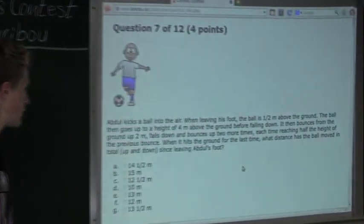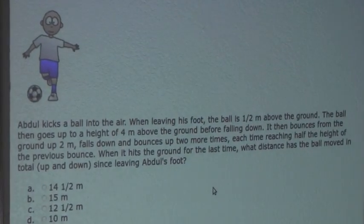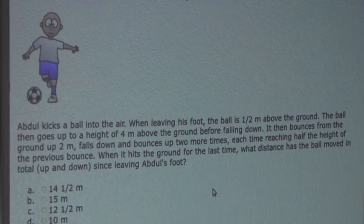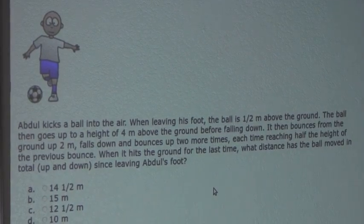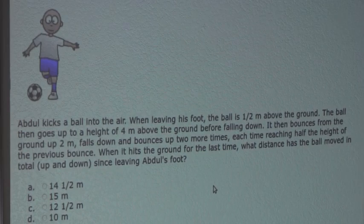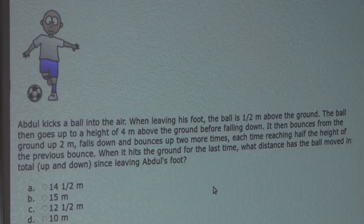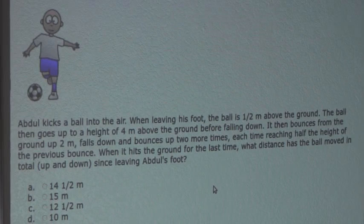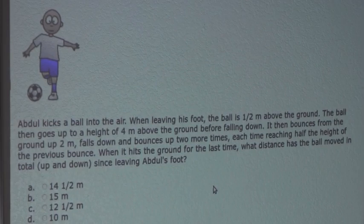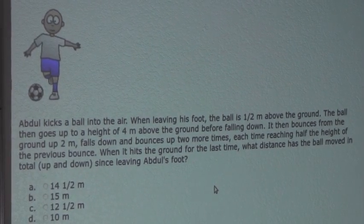So the question is, Abdul kicks a ball into the air. When leaving his foot, the ball is half a meter above the ground. The ball then goes up to a height of 4 meters above the ground before falling down. It then bounces from the ground up 2 meters, falls down and bounces up 2 more times, each time reaching half the height of the previous bounce. When it hits the ground for the last time, what distance has the ball moved in total, up and down, since leaving Abdul's foot?